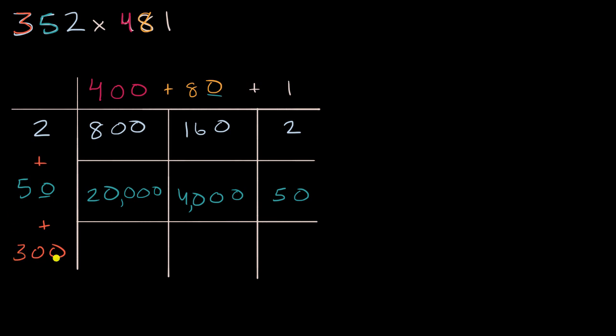And then we go to the 300, which we will distribute and multiply times each of these numbers. 300 times 400. 3 times 4 is 12. And then we have four zeros, so we get 120,000. 300 times 80. 3 times 8 is 24. And then we have one, two, three zeros. So we get 24,000. And then 300 times 1 is, of course, equal to 300.